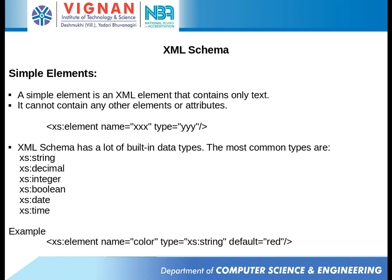To declare a simple element we use a tag called 'element', where 'xs' is the namespace of the XML schema. We write element, then the name of the element, followed by its type. There are many data types like string, decimal, integer, boolean, date, and time. As an example, you can see there is an element called 'color' whose text is of string type and the default value for color is 'red'.